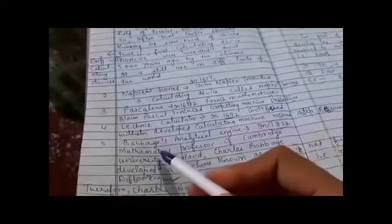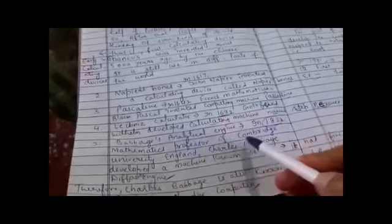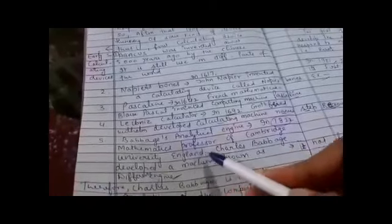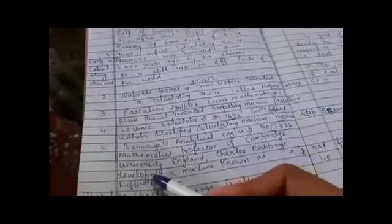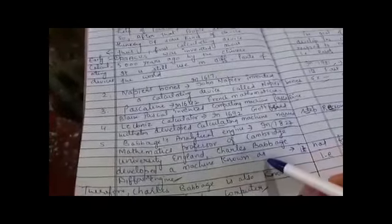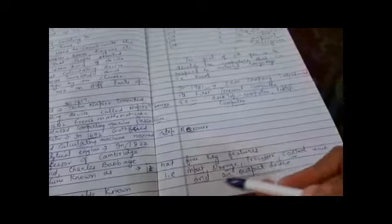Next is Babbage's analytical engine. In 1822, Mathematics professor of Cambridge University, England, Charles Babbage developed a machine known as difference engine or analytical engine. It had five key features: input, storage, processor, control unit, and an output device.